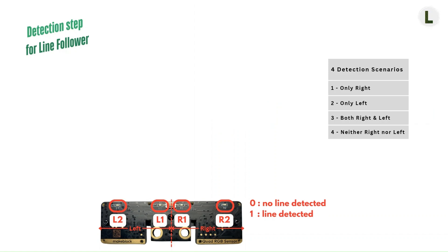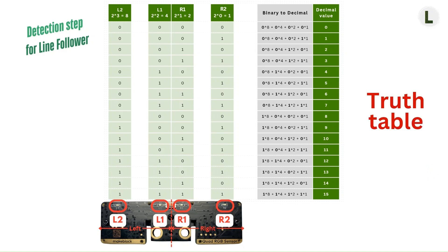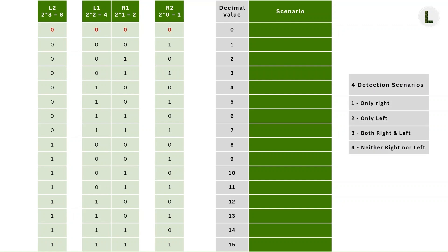Finally, there's a fourth case where none of the sensors detect a line. This means that the robot is not on the line at all. Now that we have our scenarios laid out, the next step is to see how we can detect these scenarios in our block program using the values that the QuadRGB sensor gives us. To do this, we will go back to the table of combinations, also known as the truth table, that we put together in our previous tutorial. From this table, let's identify the four detection scenarios. The first row is the case where none of the four sensors detected a line — that is L2, L1, R1 and R2 all report zeros. This matches scenario four, where neither left nor right sensors detect a line.